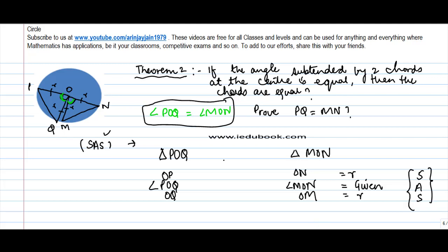So by SAS rule, these two triangles become congruent. And if that be the case, their corresponding sides, which is PQ, should be equal to MN. Corresponding sides of congruent triangles.